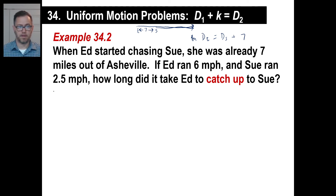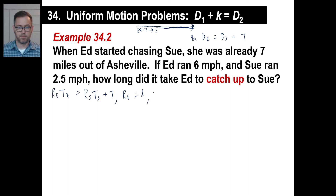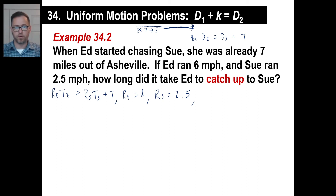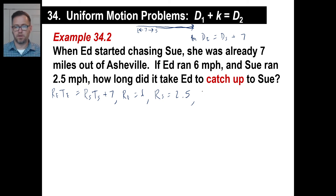Writing it as rate times time: rate of Ed times time of Ed equals rate of Sue times time of Sue plus 7. The rate of Ed is 6 and the rate of Sue is 2.5. There's no specific time given in this problem — no start times are mentioned. So we assume they start at the same time, meaning the time of Ed equals the time of Sue. That gives us a solvable equation with one variable.